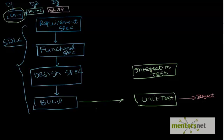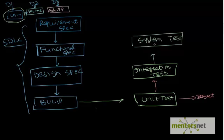In unit testing, if you find an issue you raise a defect, fix it, and once it passes all the unit test cases you proceed to integration testing. Once integration testing is complete — remembering that not all modules may be fully tested — the next step is system testing.